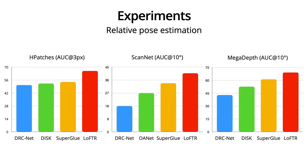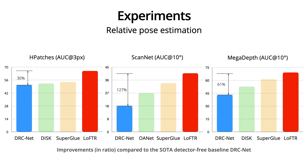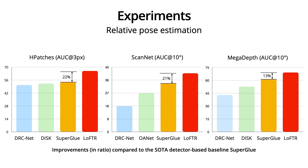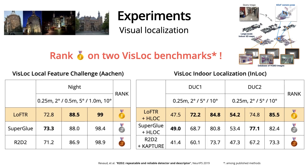We evaluate LOFTR on three datasets — HPatches, ScanNet, and MegaDepth — for relative pose estimation. These datasets exhibit large viewpoint and lighting variations and cover both indoor and outdoor scenarios. LOFTR shows significant improvements of up to 127% on ScanNet when compared with the detector-based baseline SuperGlue, and also gives improvements of up to 22% on HPatches. For experiments on visual localization, LOFTR outperforms or is on par with most state-of-the-art methods, and ranks first place on two public benchmarks among published methods.